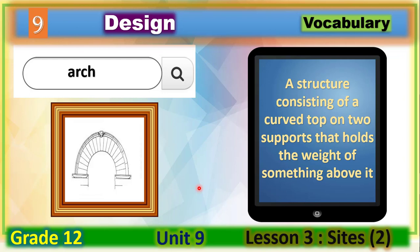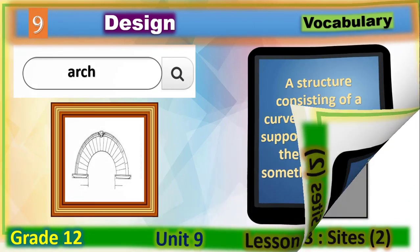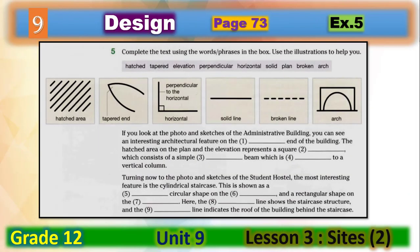Now please open your course book page 73, Exercise 5. In Exercise 5 you have to complete the text using the words or phrases in the box. Use the illustrations to help you. Please take your time to complete the sentences, and when you finish please play the video again to check your answers.